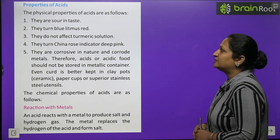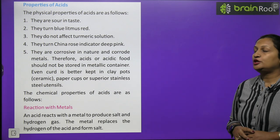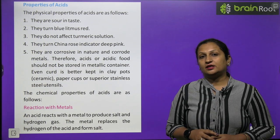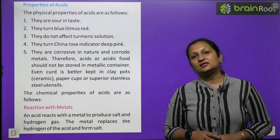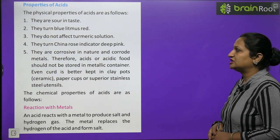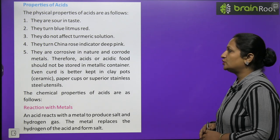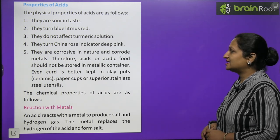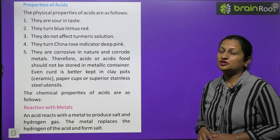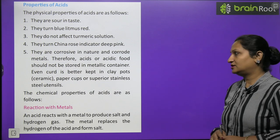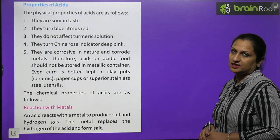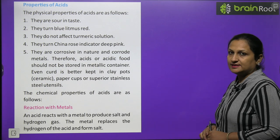Properties of acids: they are sour in taste, they liberate H+ ions in water, they turn blue litmus to red color. This is a very good identification of acids - they always turn blue litmus red. They do not affect turmeric solution. They turn china rose indicator deep pink. They are very corrosive in nature. Therefore, acid and acidic food should not be stored in metallic containers because they easily react with metal. Curd is better kept in clay pots, paper cups, or superior stainless steel utensils.